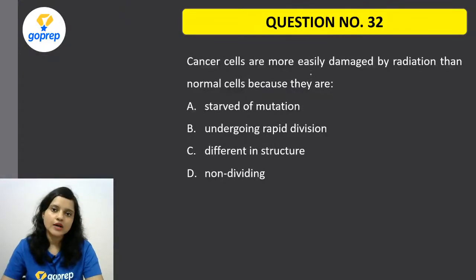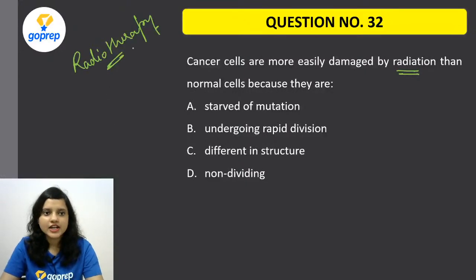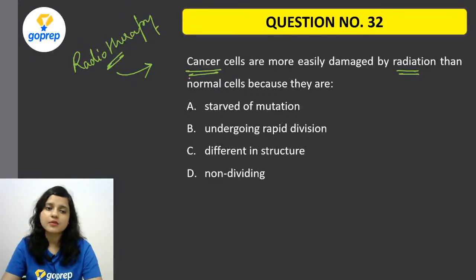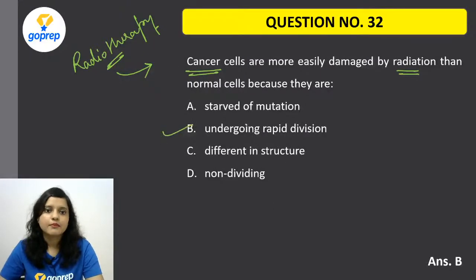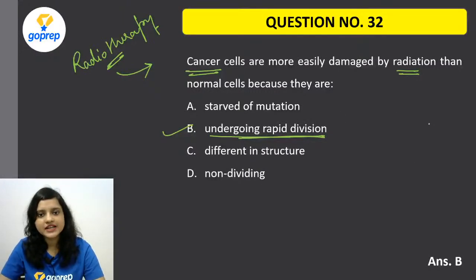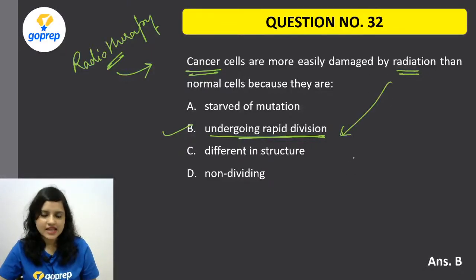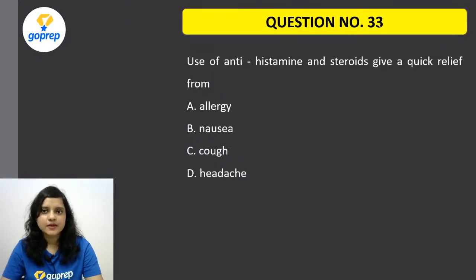Question number 32: Cancer cells are more easily damaged by radiation than normal cells. We use radiotherapy to cure cancer — but why does it only attack cancer cells and not normal cells? The correct option is B — because they are undergoing rapid division. The radiations have affinity for DNA. Since cancer cells are rapidly dividing, they have an increased amount of DNA. That's why radiation affects cancer cells and not normal cells.